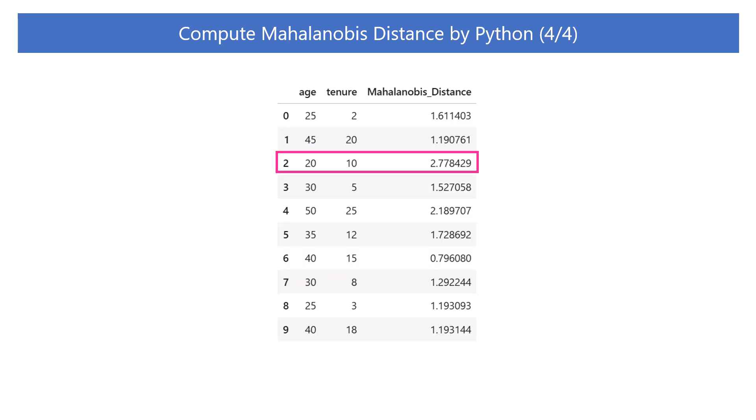The results show that the Mahalanobis distance for ID2, which was thought to be an outlier, is the largest. When we consider the correlation between age and tenure based on Mahalanobis distance, we can see that ID2 is the farthest away from the center of the dataset. Although the Mahalanobis distance is not a very large value, given the values of age and tenure, this data point seems to be considered an outlier.